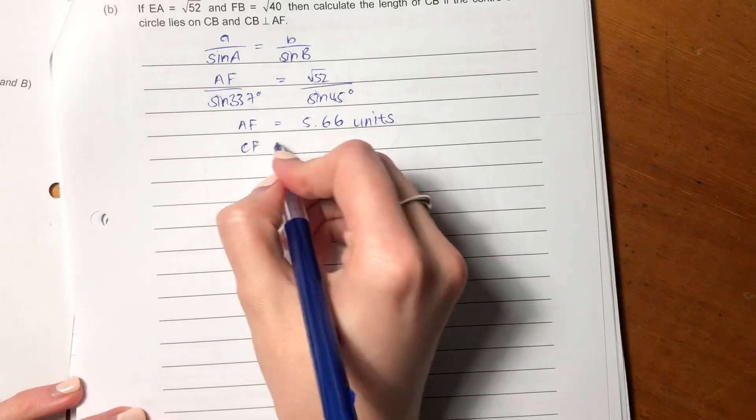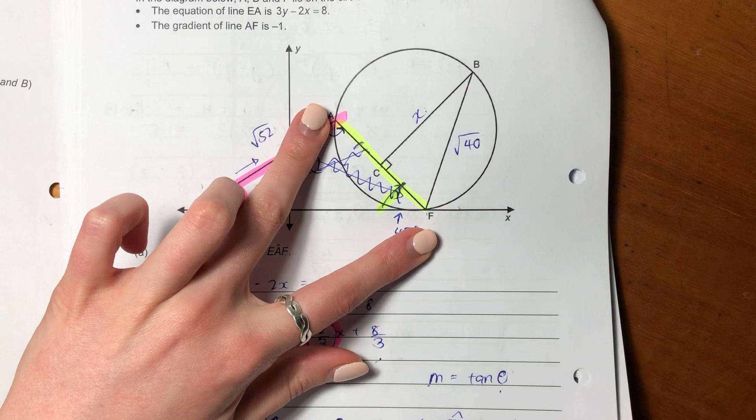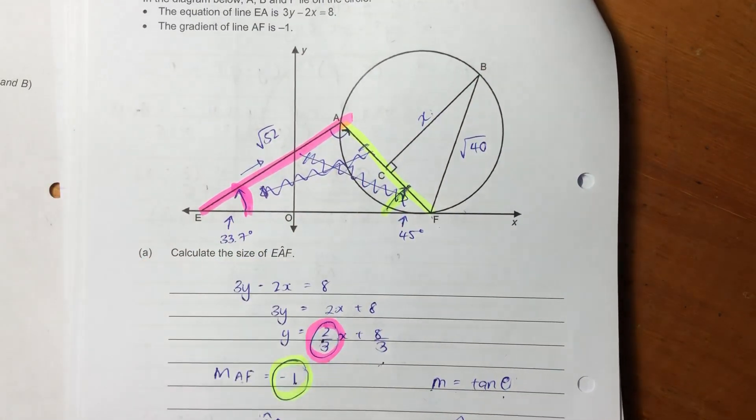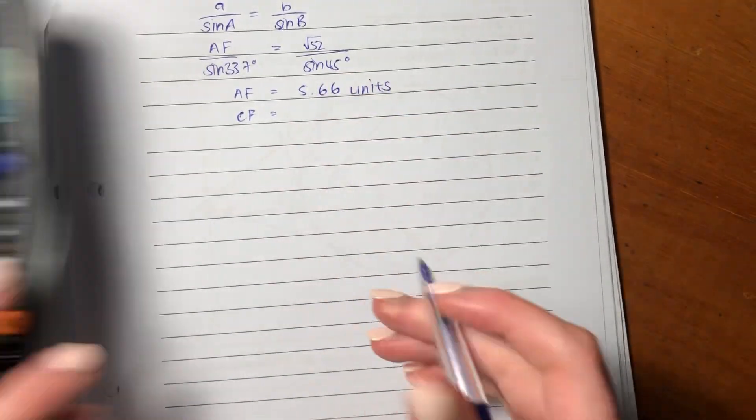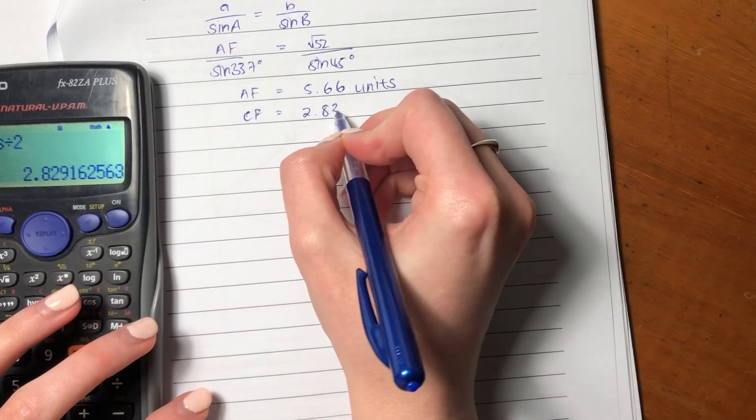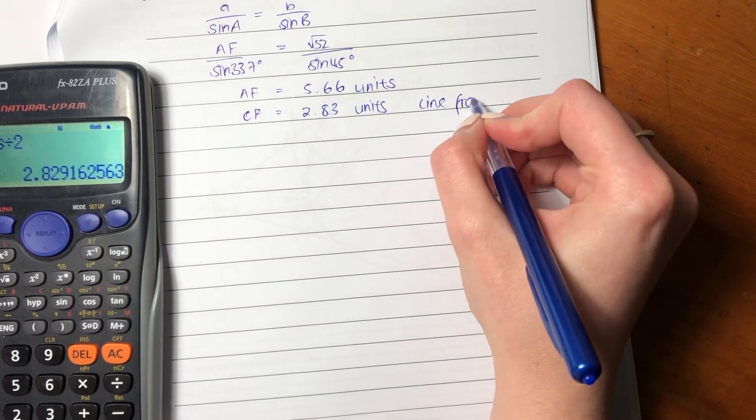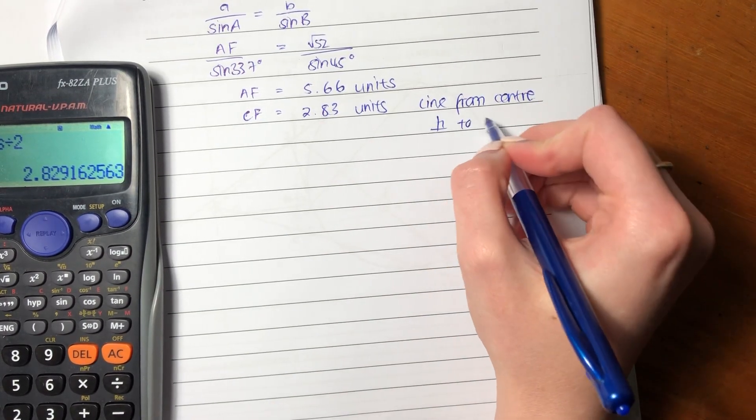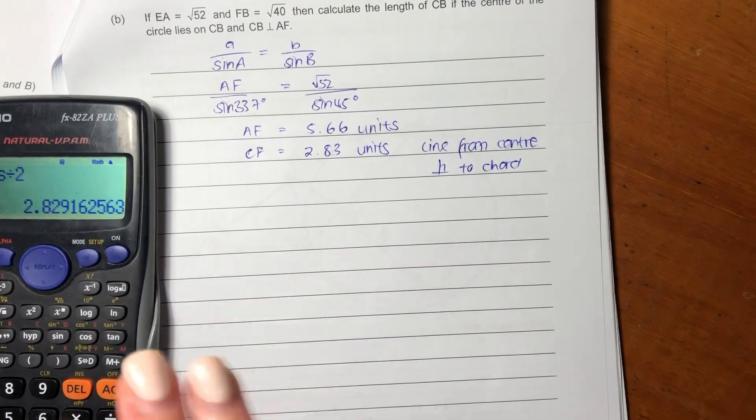CF equals... just remember I said CF is half of AF because we have a line from the center. They told us that the center lies on CB, so we know that. Line from center perpendicular to chord. So it equals basically half of this. So it equals 2.83 units, but we have to say here line from center perpendicular to chord. Remember, reasons are always very important in geometry.